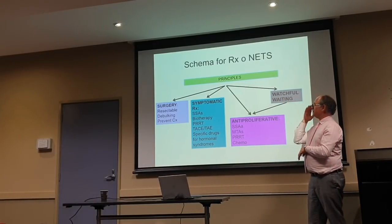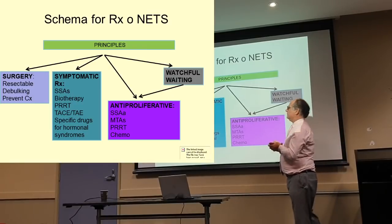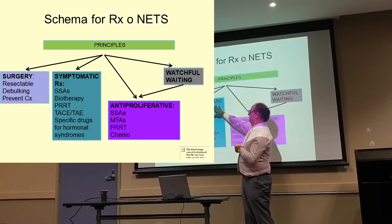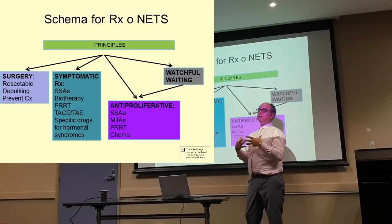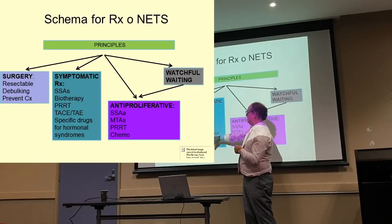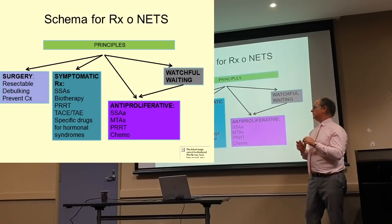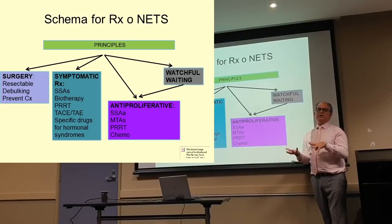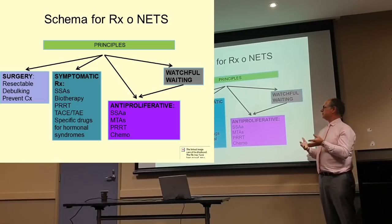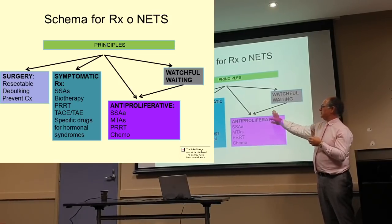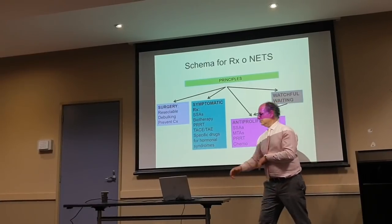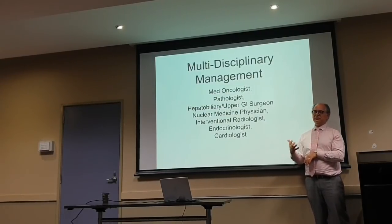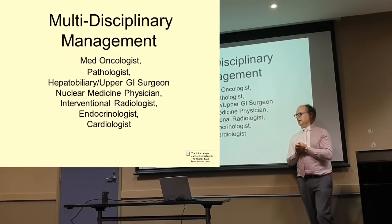This is a schema of the way we think about NETs. We can either treat by surgery — if it's resectable disease, or to debulk a lot of disease, or prevent complications like bowel obstruction. We can have symptomatic treatment to decrease hormone production by hormone therapy. Or use biological agents and liver-directed therapy. If we want to reduce the rate of disease growth, we'll use hormones, biological agents, PRRT, or chemotherapy. Some patients we just watch and wait — patients with very low-volume, very slow-growing disease not causing symptoms. If the disease starts to move, we start to treat them. It's a team effort requiring medical specialists, surgeons, endocrinologists, cardiologists, etc., all working as a team to get the best for our patients.